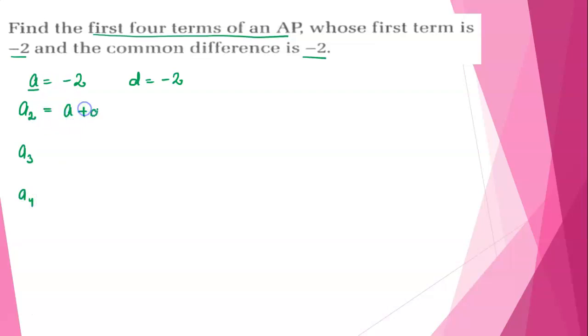Second term is first term plus common difference equals minus 2 plus minus 2. So here minus 2 plus minus 2 is minus 4.